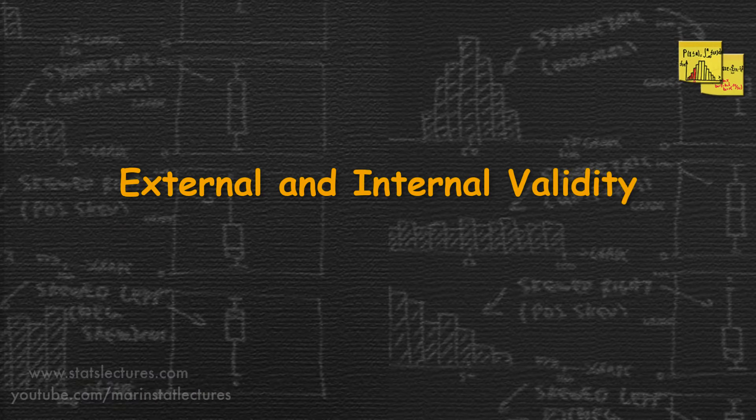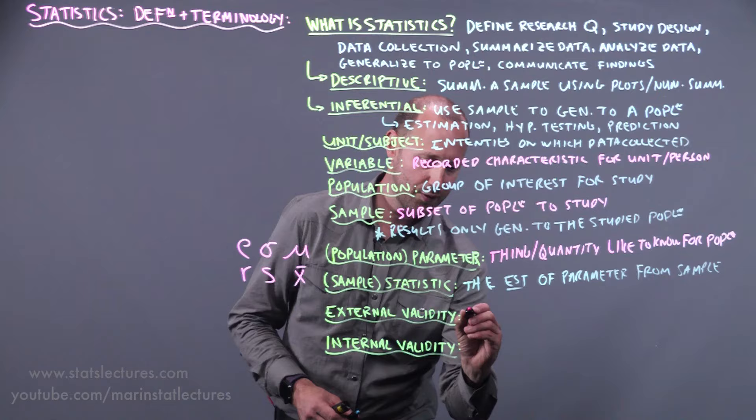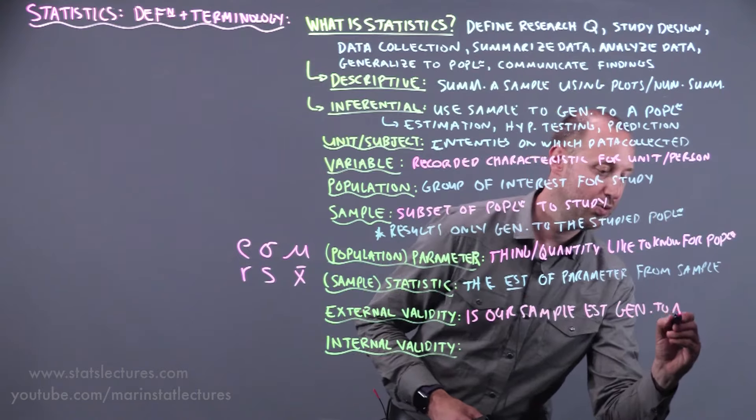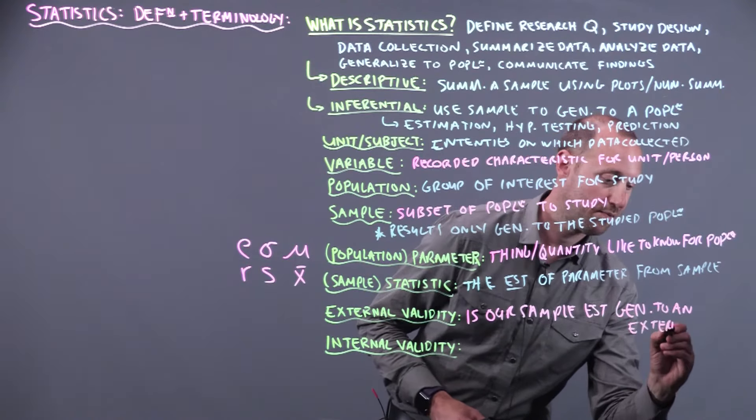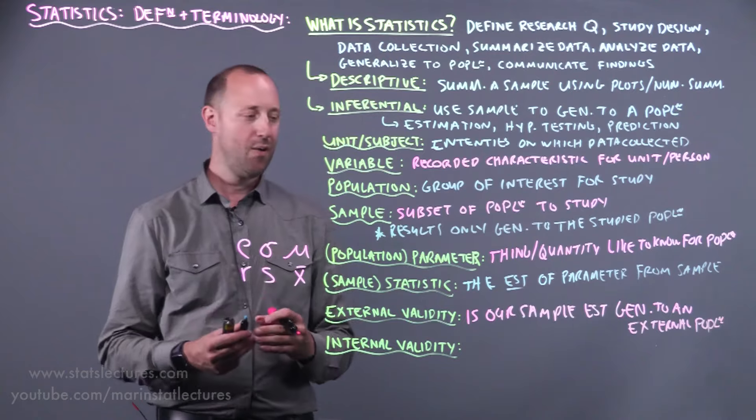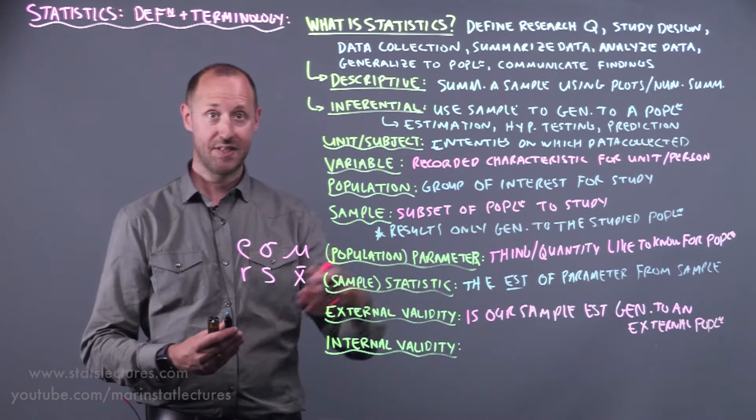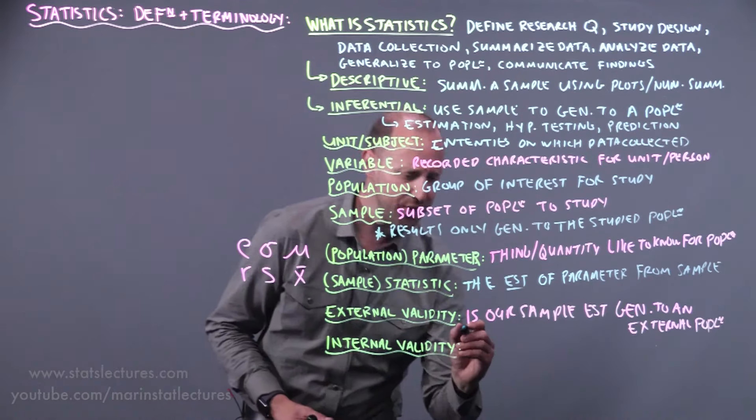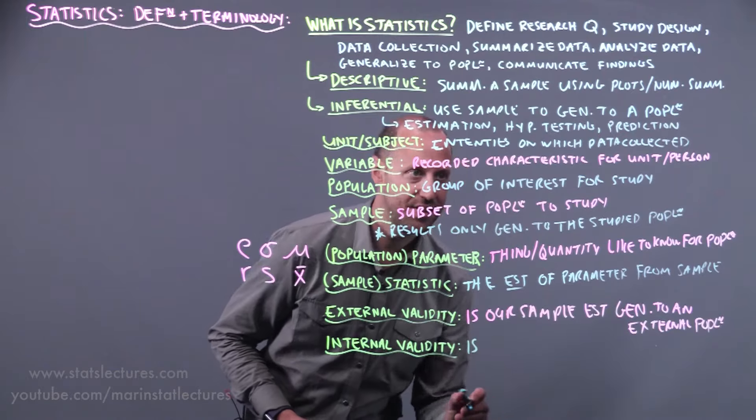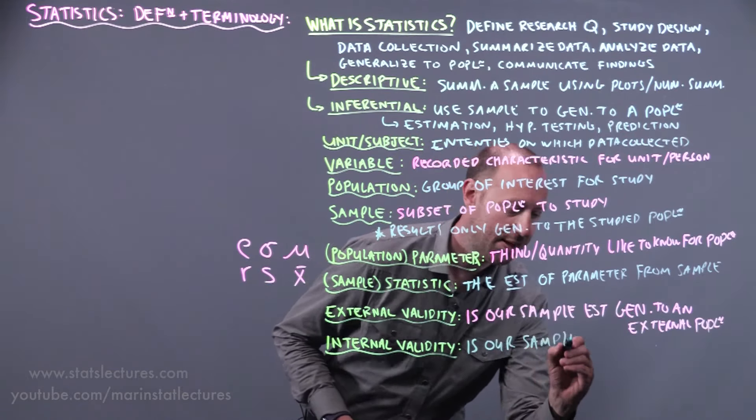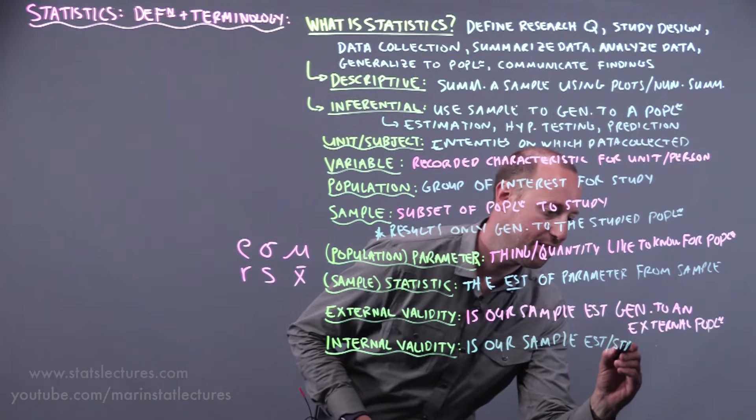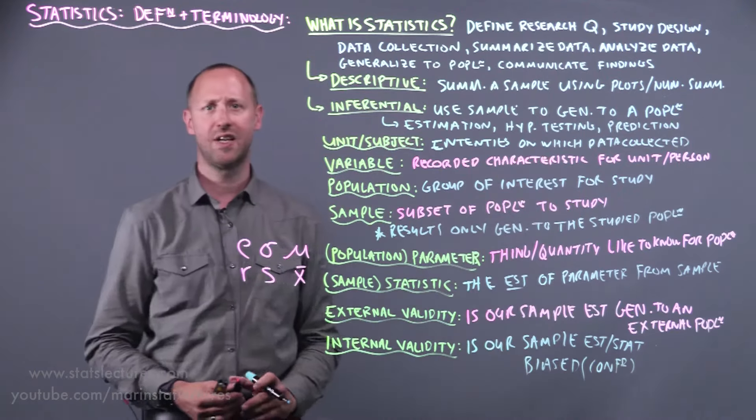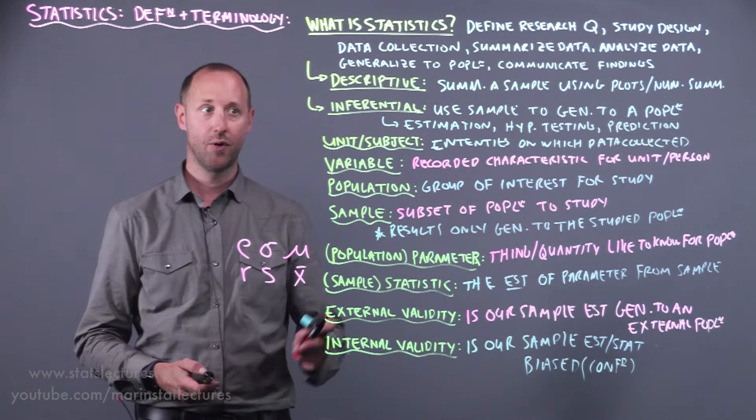Now external and internal validity. External validity refers to asking the question, is the estimate we get from our sample generalizable to an external population? In other words, how well can our sample estimate step out and represent an external population? Internal validity is essentially asking the question, is our sample estimate or our sample statistic biased and particularly is there any confounding? Confounding is an idea we'll define and explore a lot more later on.